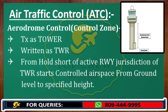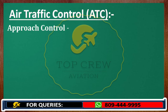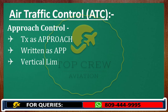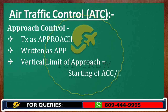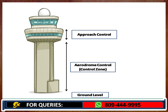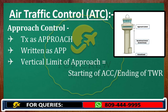Let's talk about approach control, to be transmitted as 'approach' and written as APP. What would be the vertical limit of approach? We know tower goes from ground level to the specified limit. So from the ending of tower to the starting of control — this middle gap is known as approach control. We call it 'Delhi Approach' or 'Mumbai Approach' for the specified airport. Wherever the tower limit ends and control limit starts, that vertical band is the jurisdiction of approach.